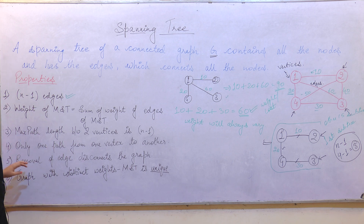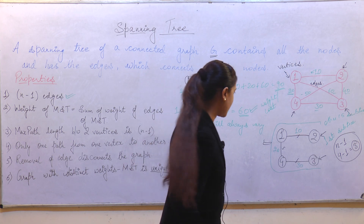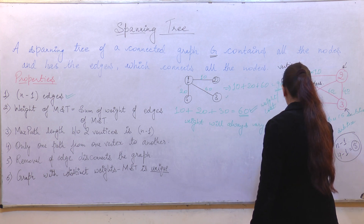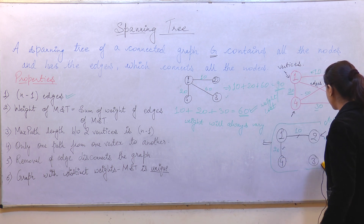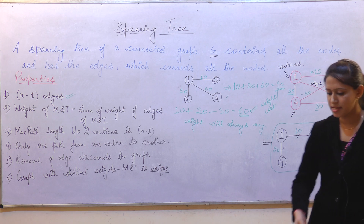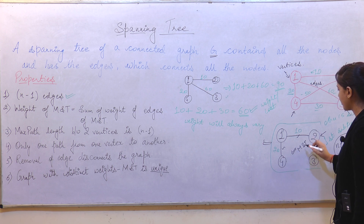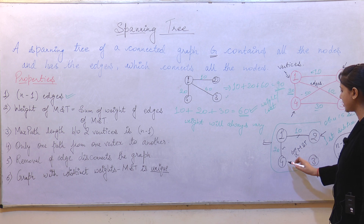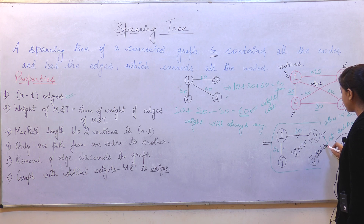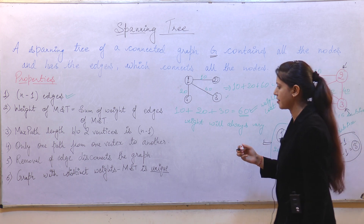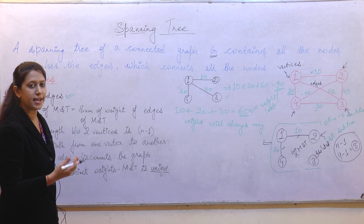The next property states that removal of an edge disconnects the graph. When we remove an edge, it will disconnect the graph. This means the graph will no longer be a minimum spanning tree because it has been disconnected and a vertex becomes isolated. So removing any edge causes the graph to disconnect and it is no longer considered a minimum spanning tree.